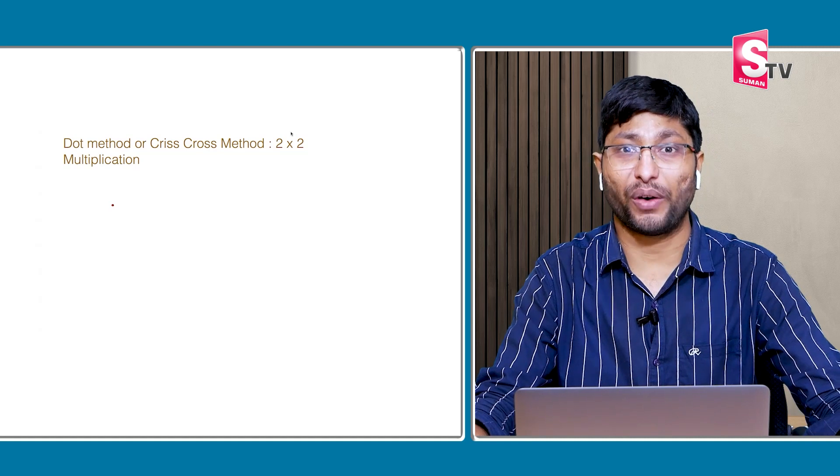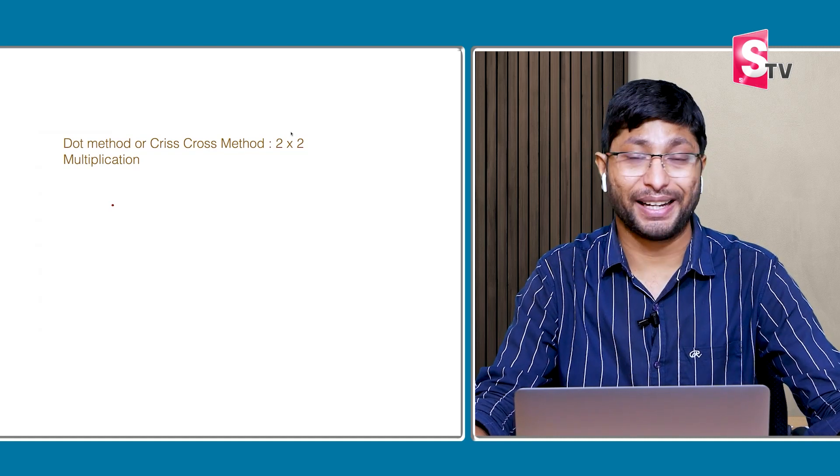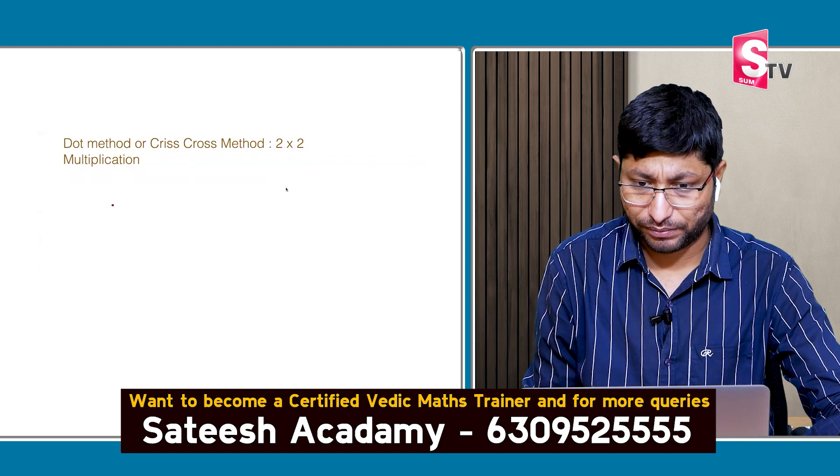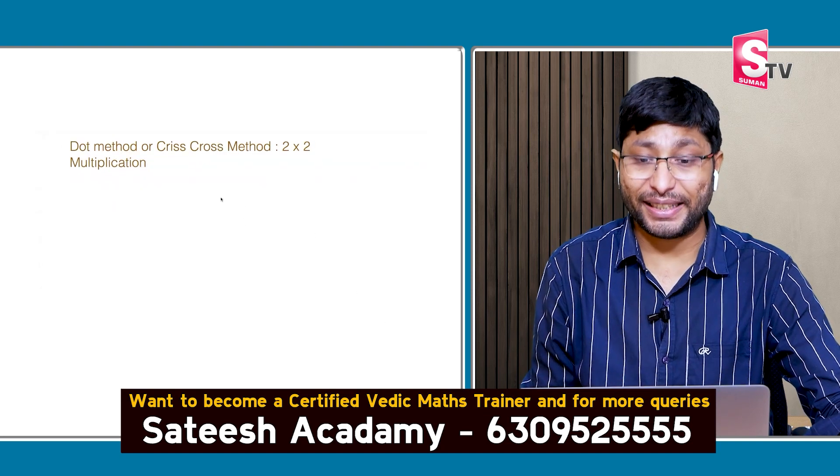In this video I'm going to explain one concept of Vedic Maths which is two by two — two digits multiplied with two digits. Vedic Maths is a combination of multiple Sutras. There are 16 Sutras. By learning all Sutras you will be able to do any kind of calculation, very simply and easily. In this video I'm teaching you one Sutra — the dot method, also called the criss-cross method.